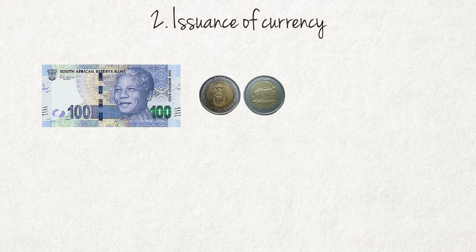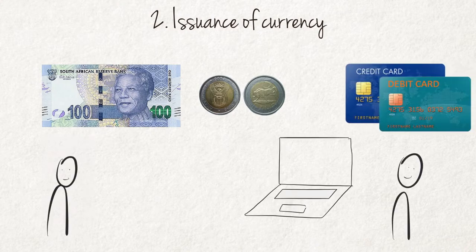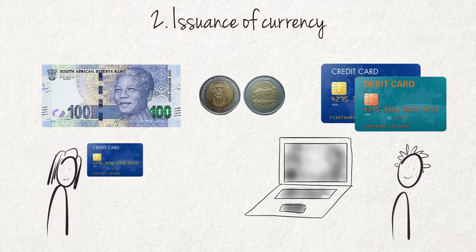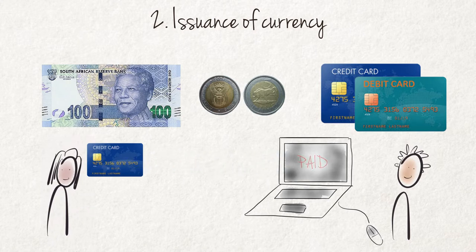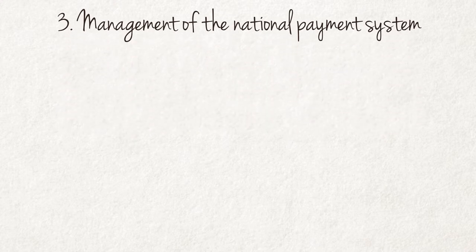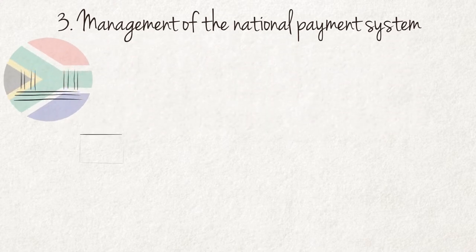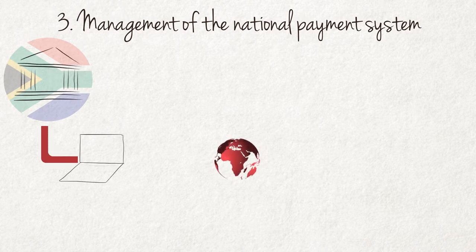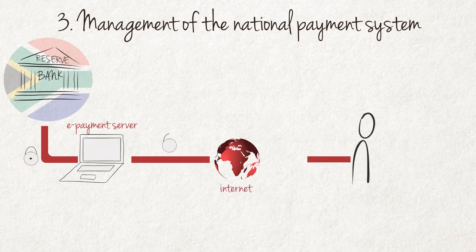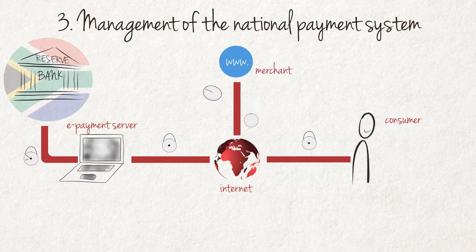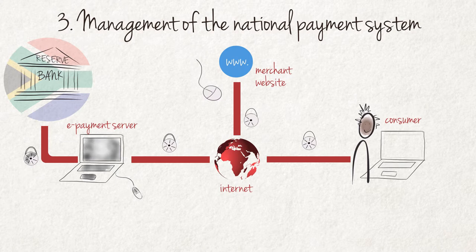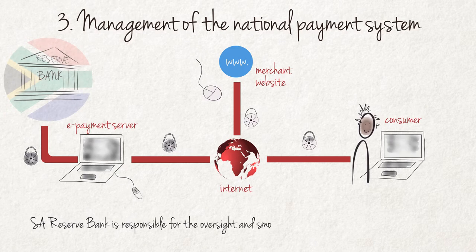Banknotes and coins are not the only way in which transactions can be concluded. A common alternative is the use of debit and credit cards and internet payments. For these transactions to be successful, money must flow from the account of the purchaser or payer to the account of the seller or recipient. Management of the National Payment System: The successful conclusion of these transactions requires a well-functioning payment system. Without a payment system, electronic payments will not be possible and all transactions will have to be concluded in banknotes and coins, which will be expensive, cumbersome, and time-consuming. The South African Reserve Bank is responsible for the oversight of the smooth functioning of the South African payment system.